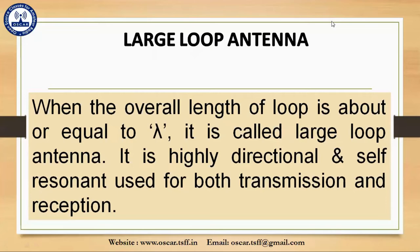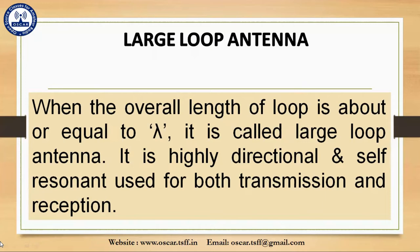For large loop antenna, when the overall length or circumference is about or equal to lambda, where lambda is the wavelength, it is called a large loop antenna. It is self-resonant — meaning it can increase its amplitude by itself — and it is highly directional, suitable for both transmission and reception.